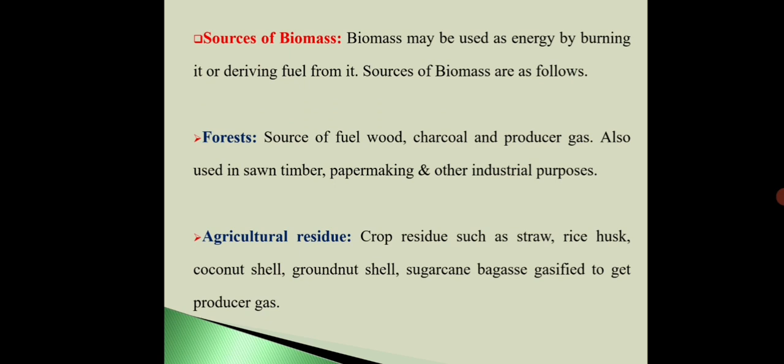The second source of biomass is agricultural residue. Crop residues such as straw, rice husk, coconut shell, brown nut shell, and sugarcane bagasse are collected and gasified to get producer gas.